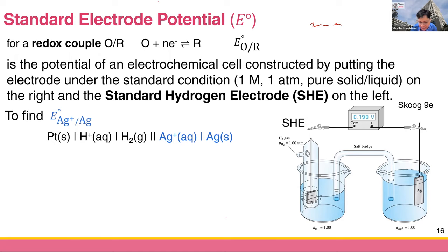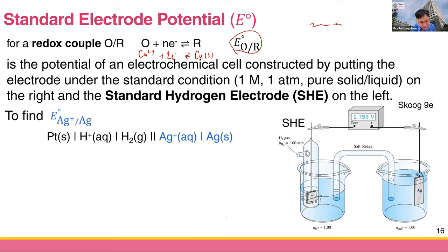For the redox couple, O is the oxidized species and R is the reduced species. So O receives electrons and converts to R. For example, copper two-plus can receive two electrons and you get copper solid. You can denote the standard electrode potential using the symbol E-naught, O-slash-R — for example, E-naught copper-two-plus slash copper. This is the abbreviation for the standard electrode potential of a specific redox couple.